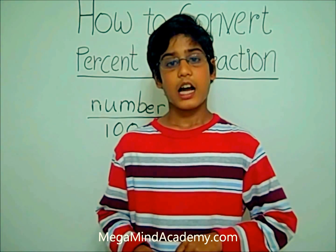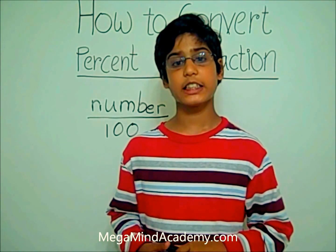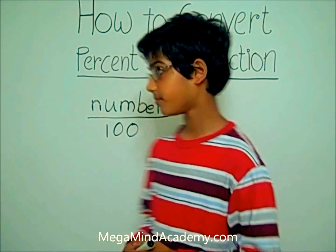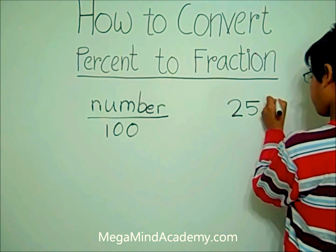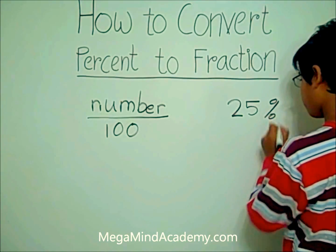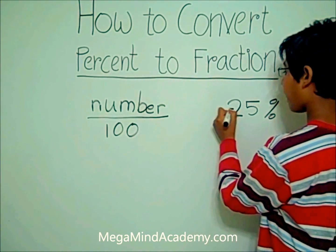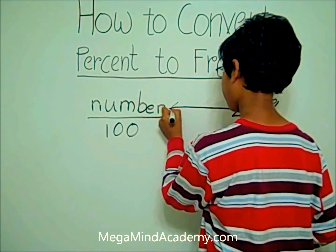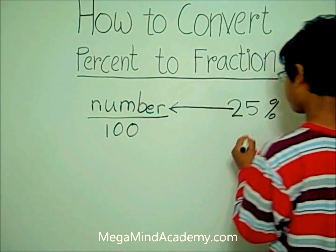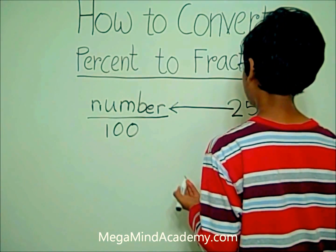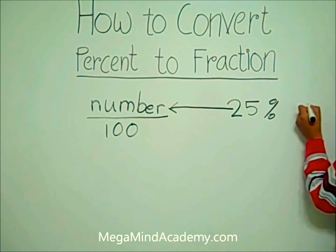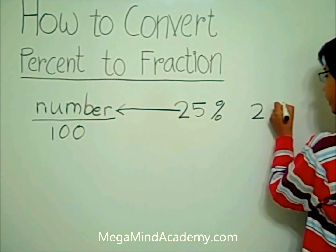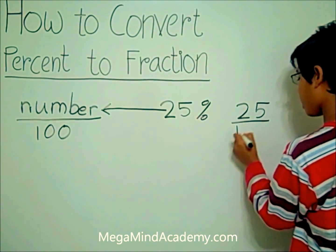Let's say our percent is twenty-five percent. How do we convert twenty-five percent into a fraction? Well, twenty-five would become the numerator. Now let's write the new fraction: twenty-five over one hundred.